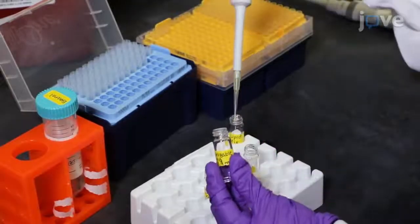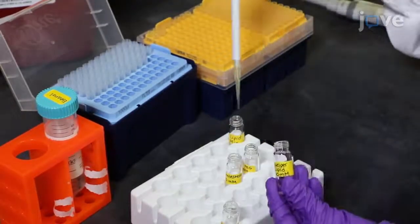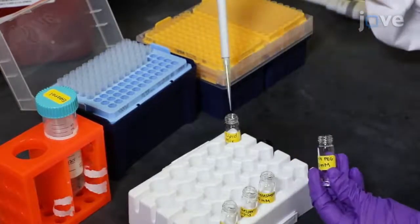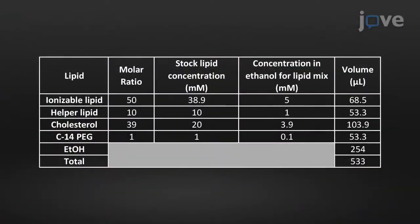Begin by adding the appropriate amount of each lipid stock solution to a glass vial with intermittent vortexing as indicated in the table.